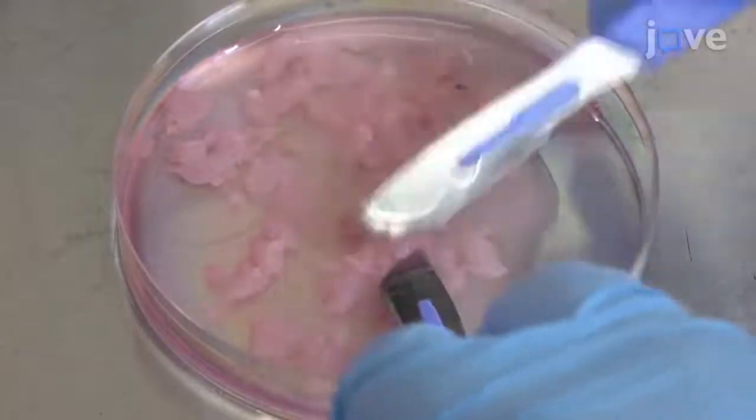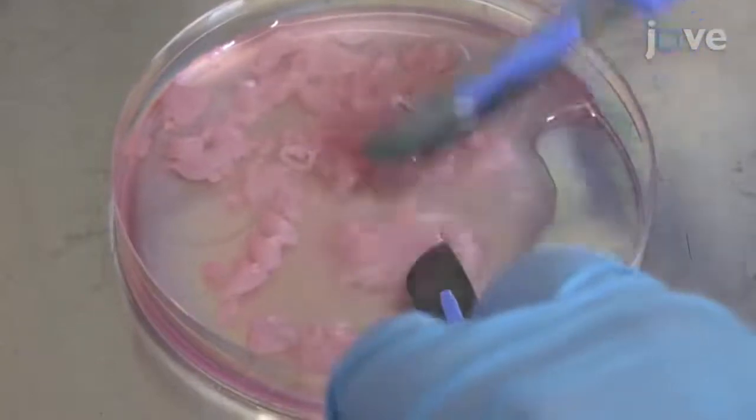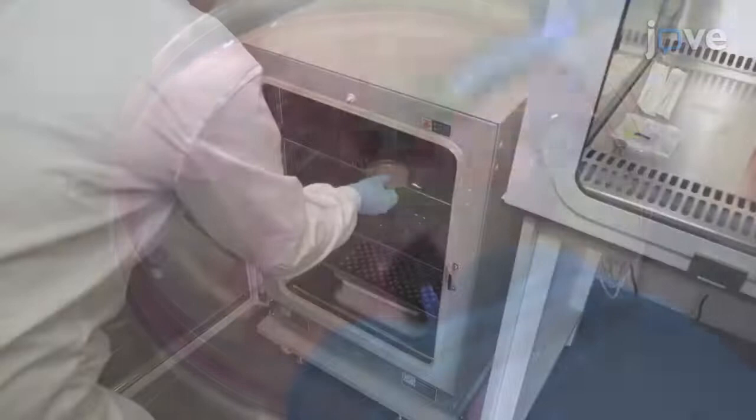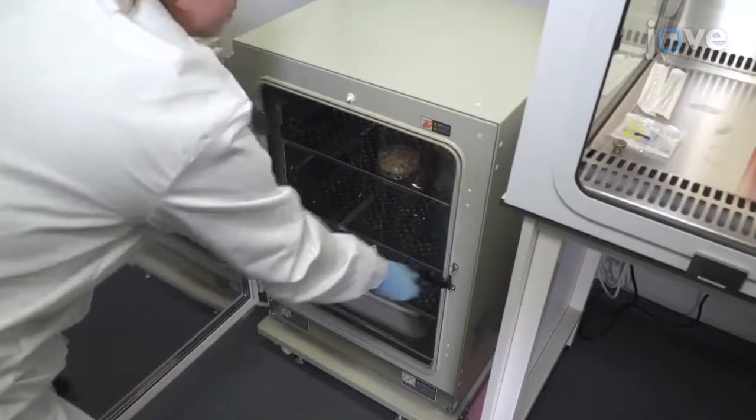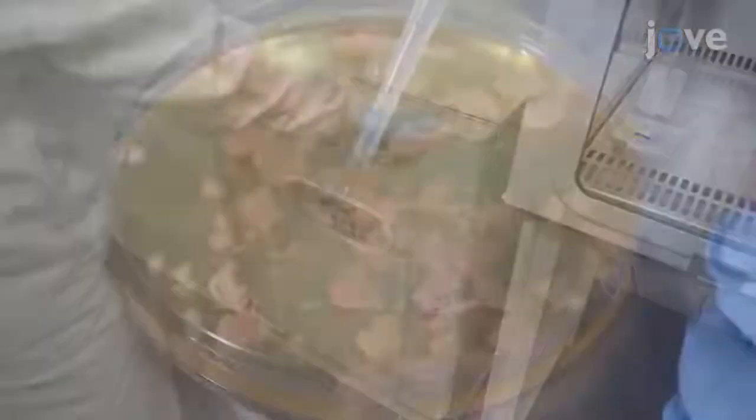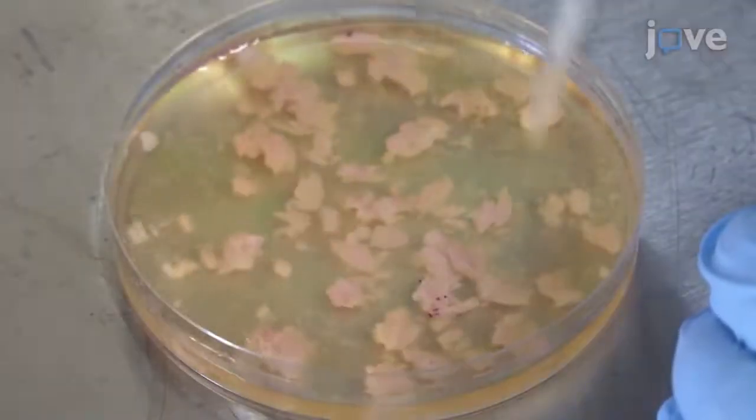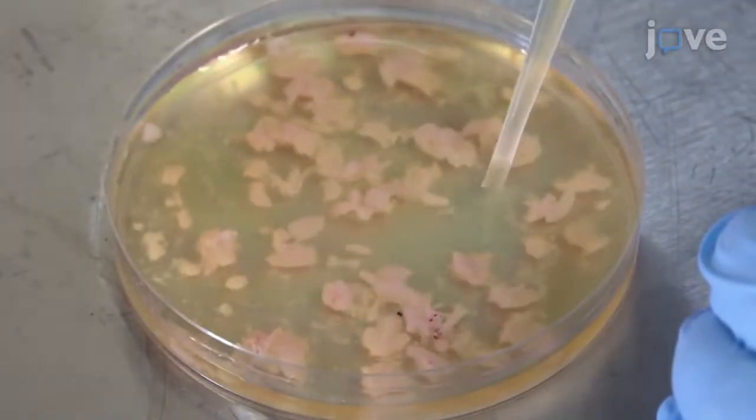Use sterile scissors or a scalpel blade to cut the BF into pieces that are less than five millimeters in diameter. Incubate at 37 degrees Celsius with periodic gentle agitation for 30 minutes.